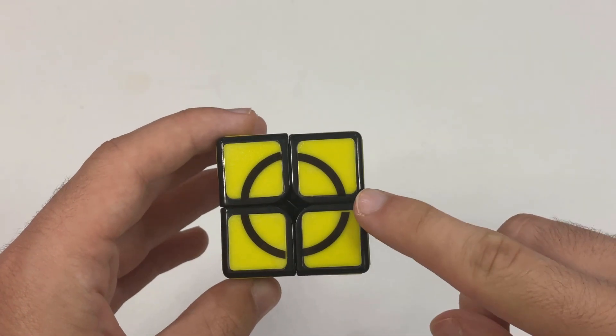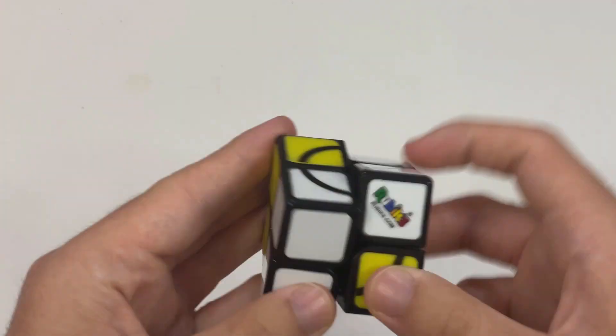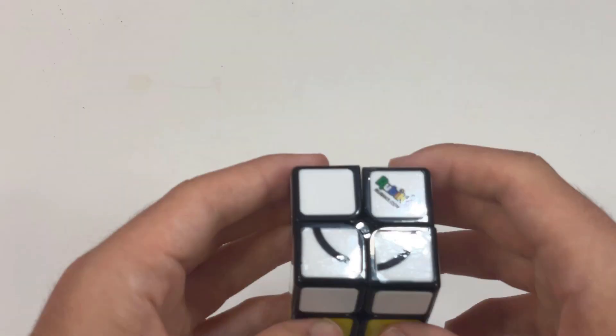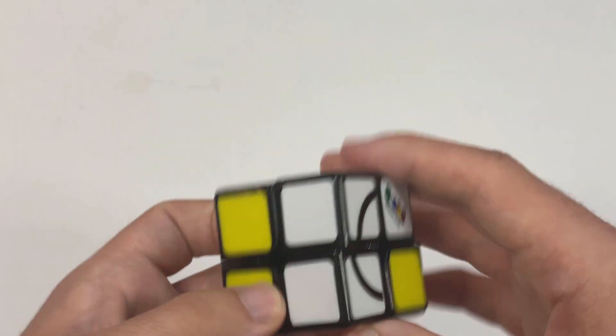Now on to the final most demanding level, level three. Now the circles are on both the yellow and white faces, which means that orientation matters on both layers. Now this is a little bit more of a challenge. I can solve the first layer like that, and for the second layer for the first time I actually have to use an algorithm, but again not too hard.